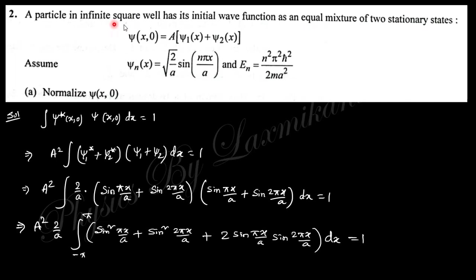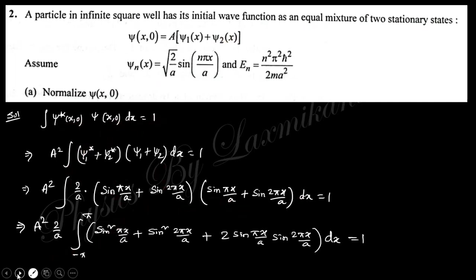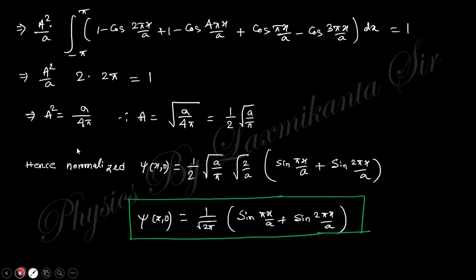Next: a particle in an infinite square well is in an equal mixture of stationary states ψ₁ and ψ₂. Given that ψₙ has the standard form, normalize ψ(x,0). Multiplying and integrating, you obtain the normalization constant A, and the normalized wave function is determined accordingly.